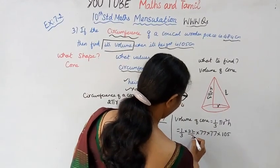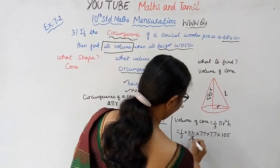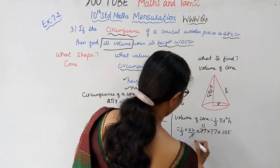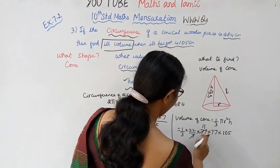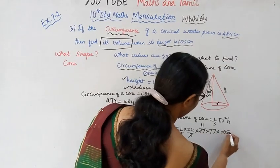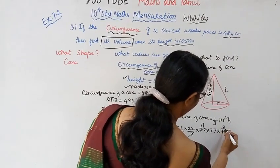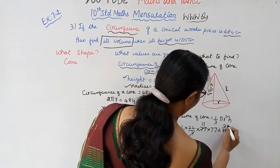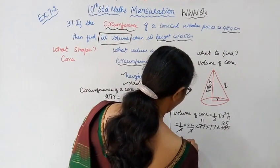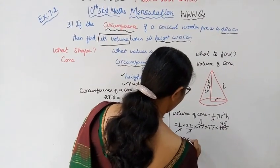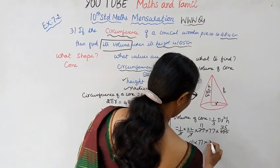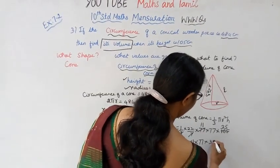Now we cancel: 7 will cancel with 77, giving 11. Then 3 will cancel with 105, giving 35. So the expression becomes 22 into 11 into 77 into 35.